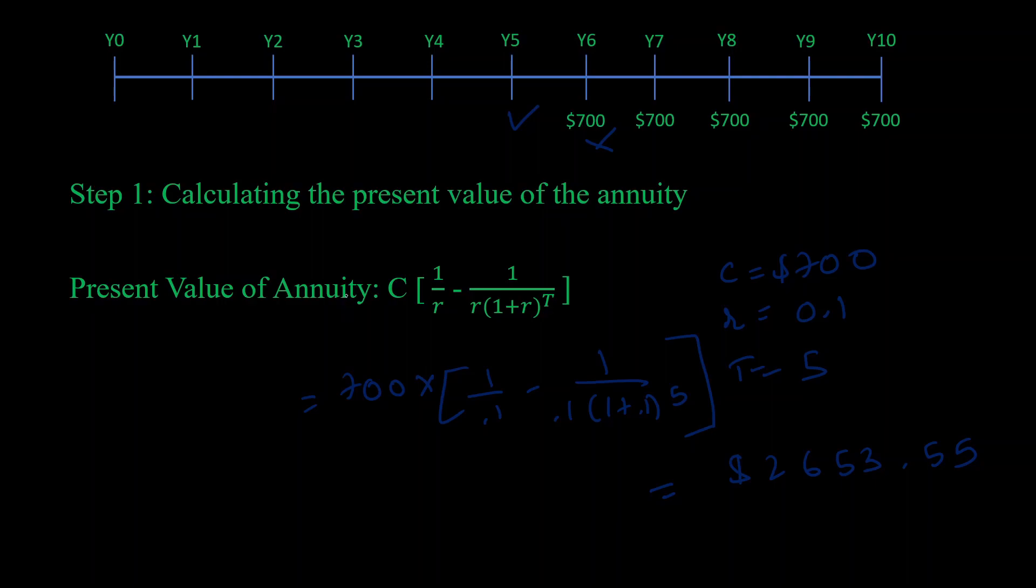That's where students often go wrong. We have our value of this annuity at year 5, which is $2,653.55. Now let's move on to step 2 and discount this to year 0. Here we have the present value of investment formula.